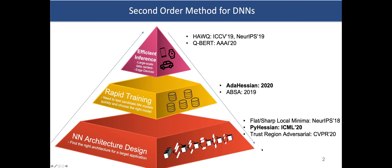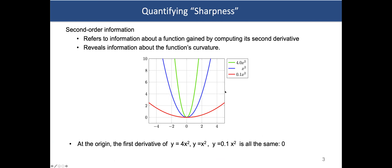Second-order information is essentially the second derivative. For a 1D example like y = x², it measures the curvature of the loss landscape — gradient measures slope, second order measures curvature. For example, y = 4x² has higher curvature than y = x². All three functions y = 4x², y = x², and y = 0.1x² have gradient zero at the origin, but the second derivative is non-zero and tells you how sharp or flat the loss landscape is.